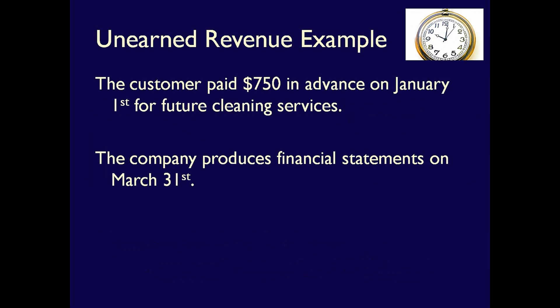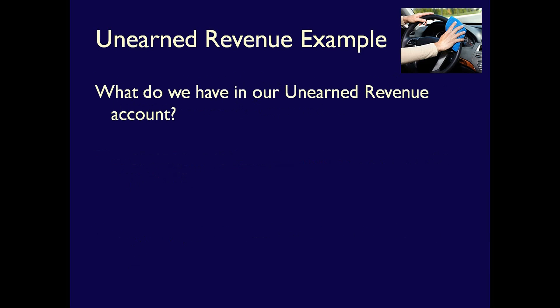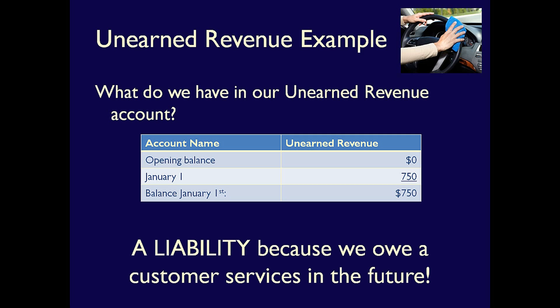Now let's fast forward three months. We now stand at March 31st. The company is going to produce financial statements, so we have to be sure that all the liabilities on our balance sheet are still owed to third parties at March 31st. Liabilities have to equal the amount due in the future. If not, we'll have to make an entry to recognize that some liabilities have been settled. If we look at our unearned revenue account, the last time we did anything with it was on January 1st, so on March 31st we still have our January 1st balance of $750.